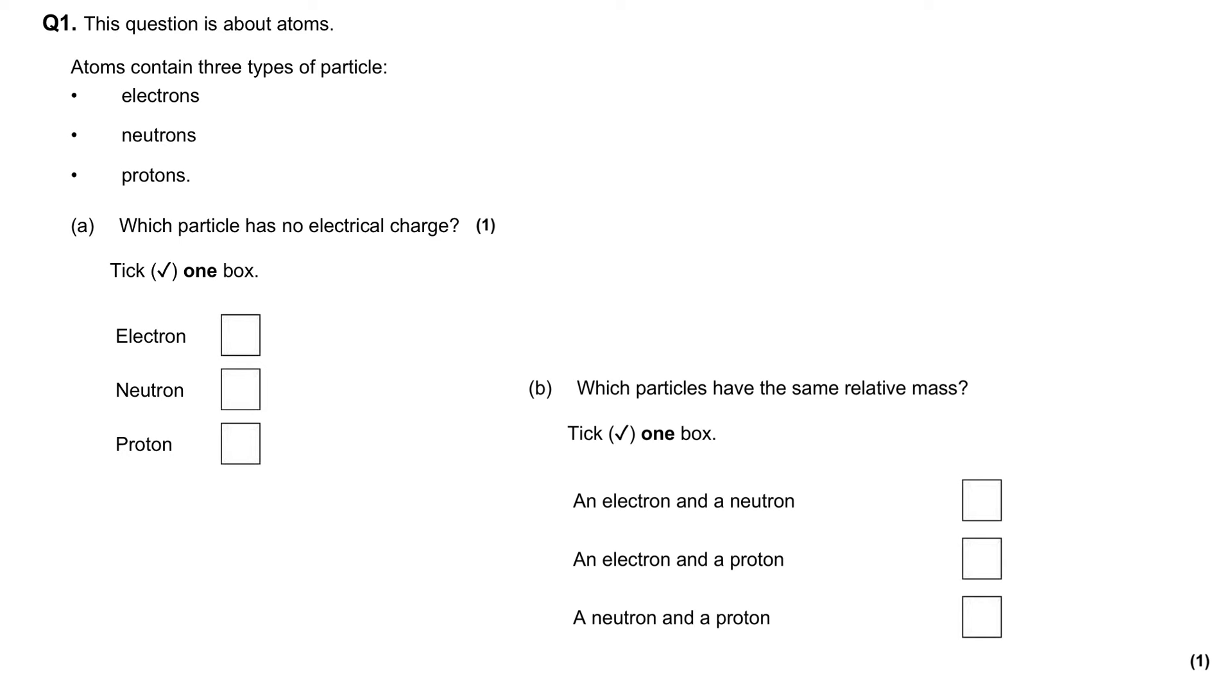This question is about atoms. Atoms contain three types of particle: electrons, neutrons, and protons.